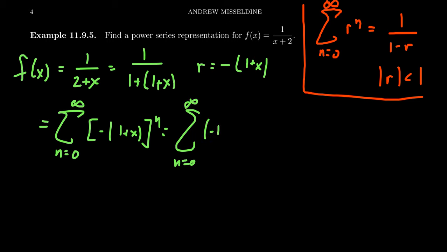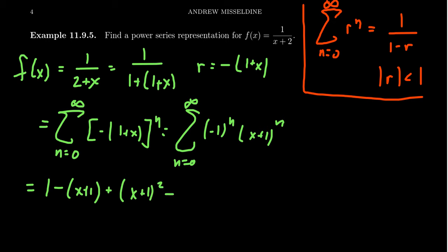This is an alternating geometric series from n=0 to infinity. We get (-1)^n times (x+1)^n. In expanded form, we get 1 minus (x+1) plus (x+1)² minus (x+1)³, and this pattern continues on forever.